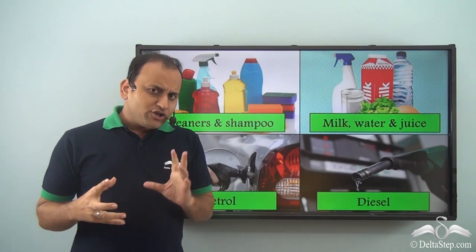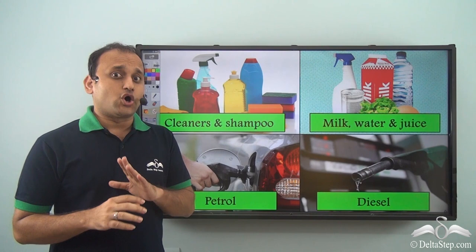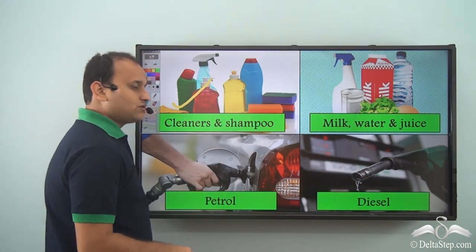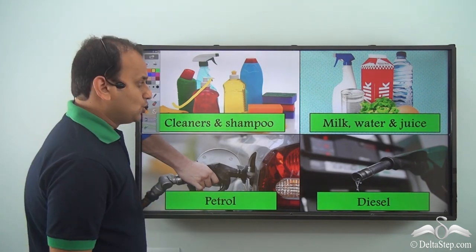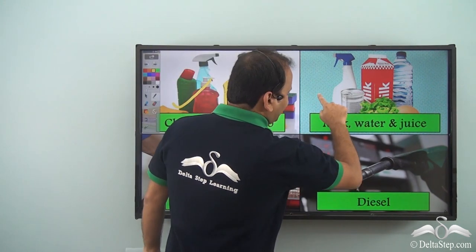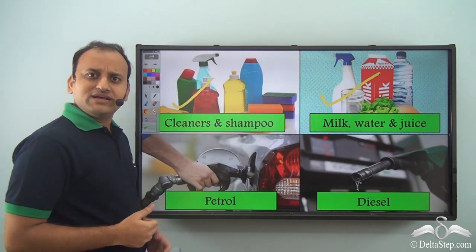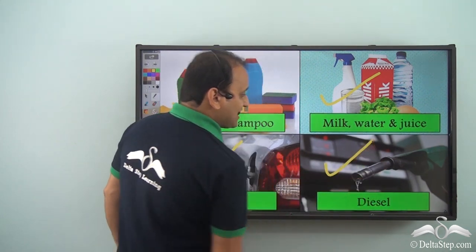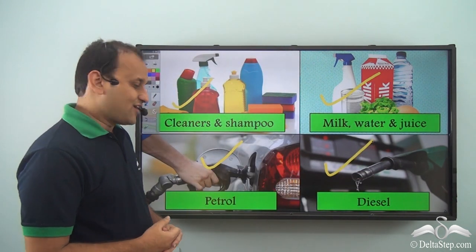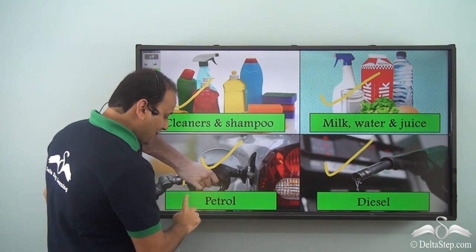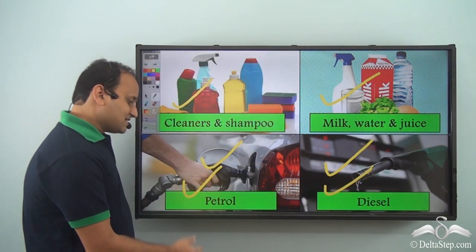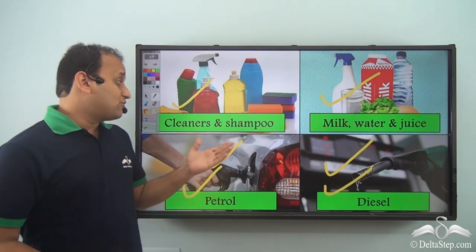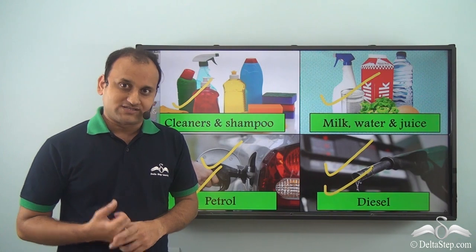Now where do you find liquids? Well, liquids are all around you. Whether it is the cleaner and the shampoo, milk, water, juice — they are all liquids. What about petrol and diesel which drive our cars and buses? Even petrol and diesel are liquids. So liquids are all around us and are very useful to us.